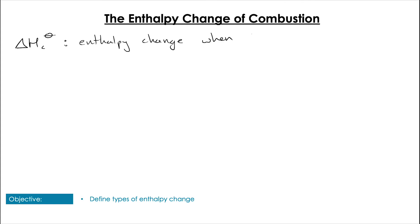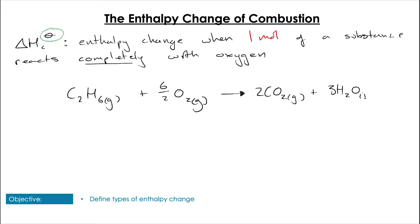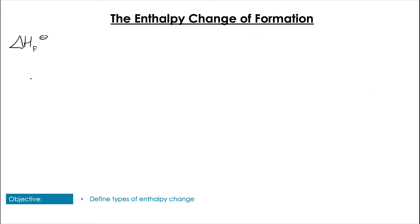The enthalpy change of combustion, or ΔHc, is the enthalpy change associated when one mole of a substance is reacted completely with excess oxygen. Mind the one mole here. So we take one mole of C2H6, which would react with six over two moles of oxygen to produce carbon dioxide and water, and the enthalpy of combustion associated with that is -1560 kJ/mol.